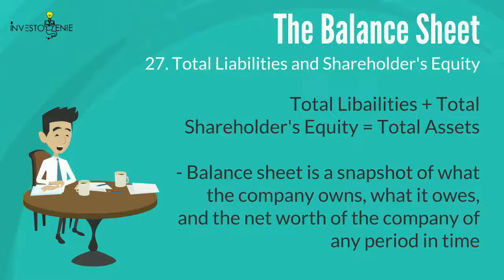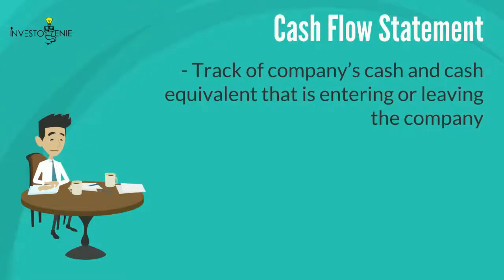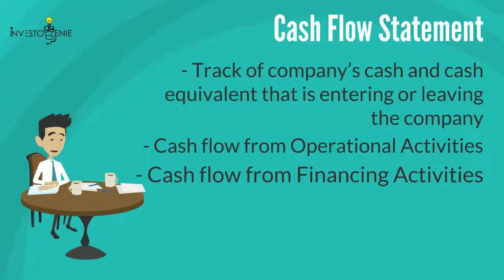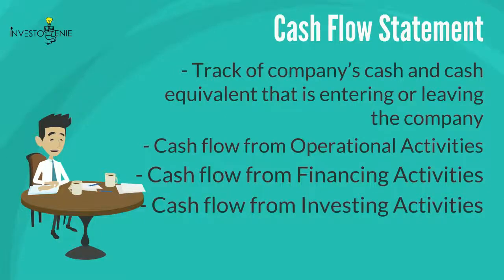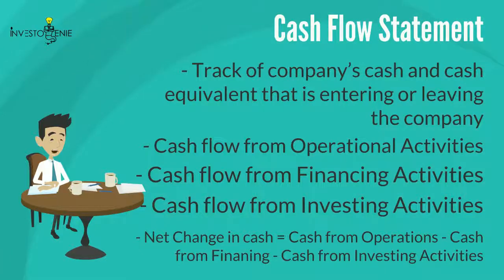Remember: the balance sheet is a snapshot of what the company owns, what it owes, and the net worth of the company at any period in time. Now let's look at the cash flow statement. The cash flow statement tracks a company's cash and cash equivalents entering or leaving the company. It helps investors understand the cash operations of the company, how much cash is allocated to financing, and how much is being used in investing. The overall net change in cash is shown at the end of the statement.